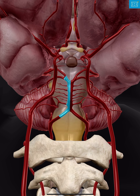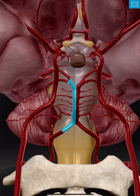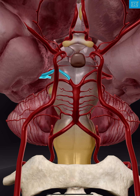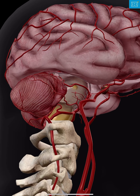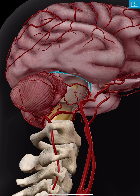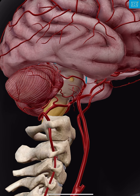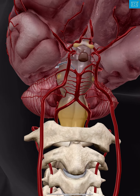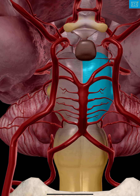Coming up from the basilar artery, we'll focus on a few key vessels. The first branch — here on the left and here on the right — is called the posterior cerebral artery. If you zoom out, you can see it courses along the deep surface of the temporal lobe, heading backward toward the occipital lobe. That's why it's called the posterior cerebral artery.